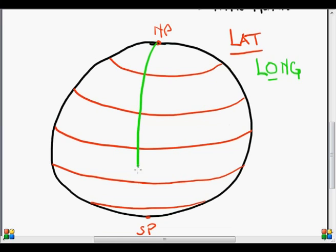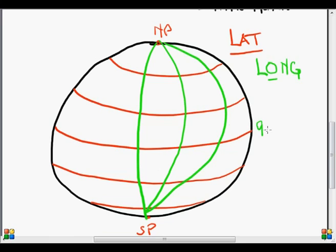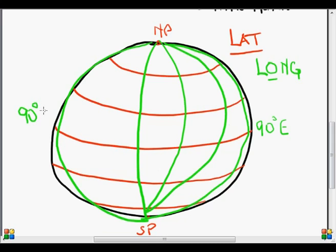So if here is Greenwich, here is 30 degrees east, 60 degrees east, the horizon over there would be 90 degrees east. And likewise, the horizon on this side would be 90 degrees west. And here somewhere would be 30 degrees west, and 60 degrees west.